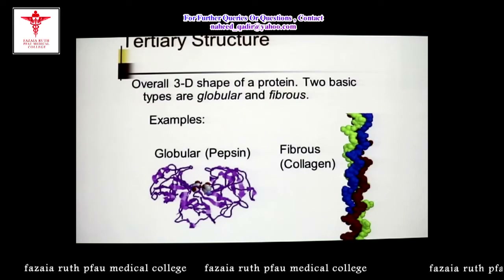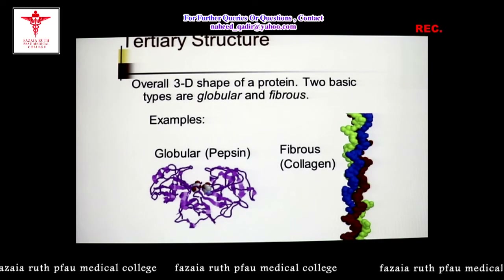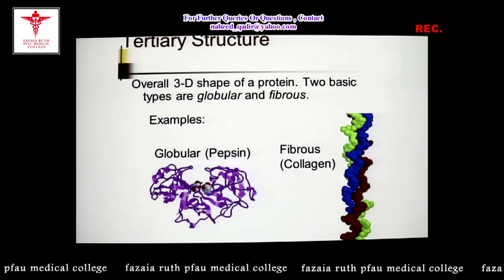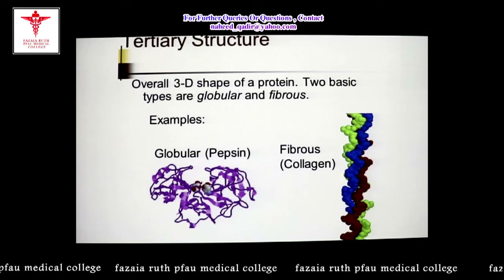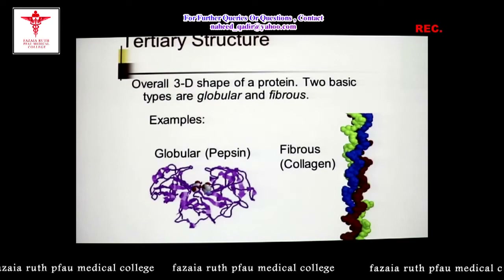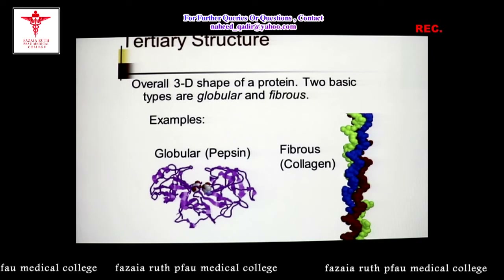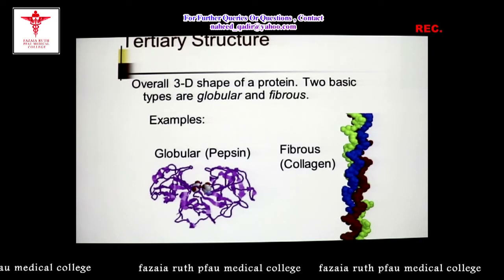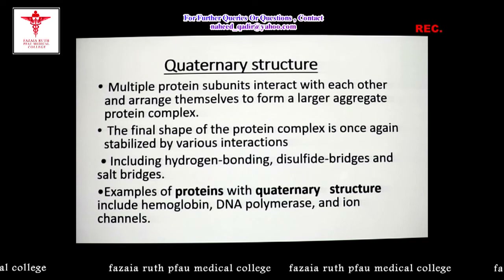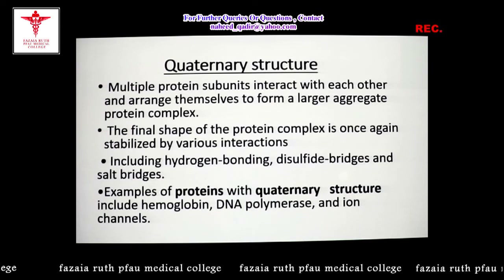All globular proteins are examples of the tertiary structure of protein. The enzyme pepsin is a globular protein and an example of tertiary structure. Myoglobin is a classic example of the tertiary structure — a single polypeptide chain in its functional, folded form. Many enzymes that are comprised of a single polypeptide chain are also examples of the tertiary structure of protein.